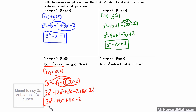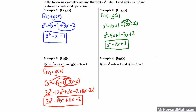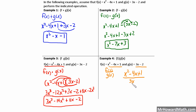We just multiplied those two functions together, giving us the product of these two functions. Now we're going to take the quotient. We take f of x, x squared minus 4x plus 1, and divide it by g of x, 3x minus 2. We could use long division, but it's just as easy to leave them this way. So the final answer, we're just going to leave it as a fraction: x squared minus 4x plus 1 over 3x minus 2.